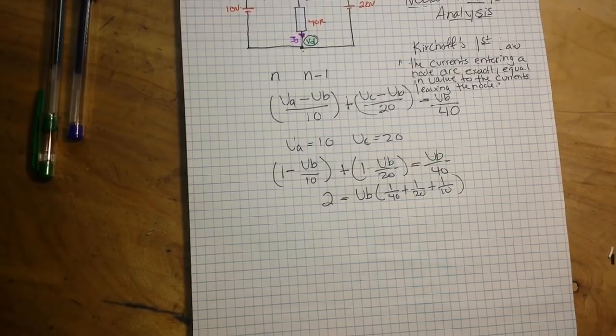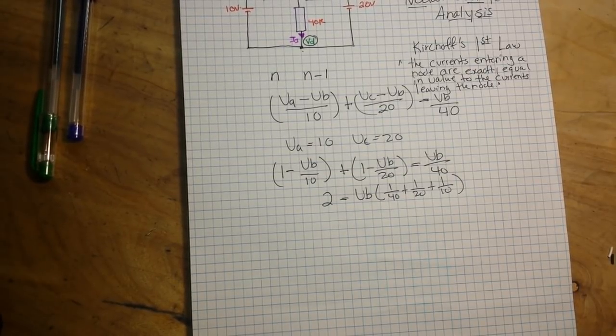2 equals VB/40 plus VB/20 plus VB/10. Simple, right? I'm sweating. It's so humid here. I had to stop and mop my forehead.